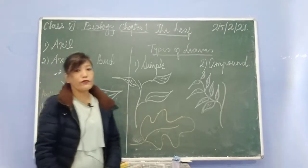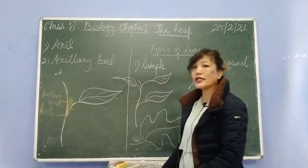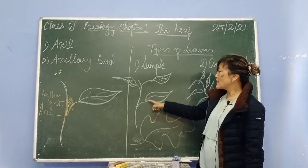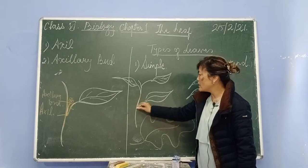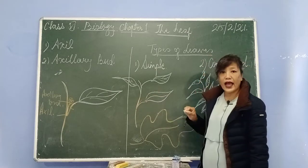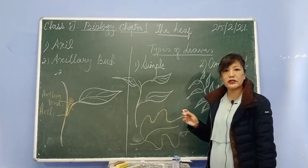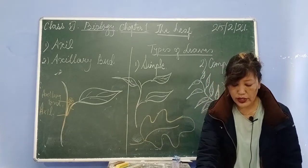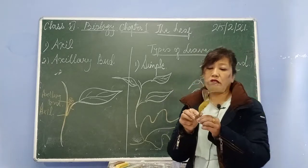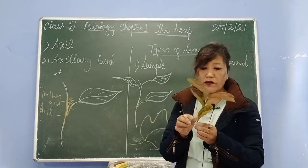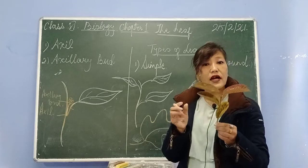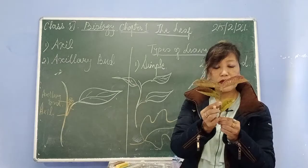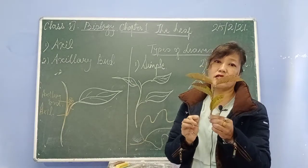Now the next type of leaf is compound leaf. One thing to note about simple leaves: since the leaves arise from the stem, simple leaves have axillary buds — axillary buds are present in simple leaves. For example, this is the leaf of guava — guava is an example of a simple leaf and it does arise from the stem, not from the petiole.